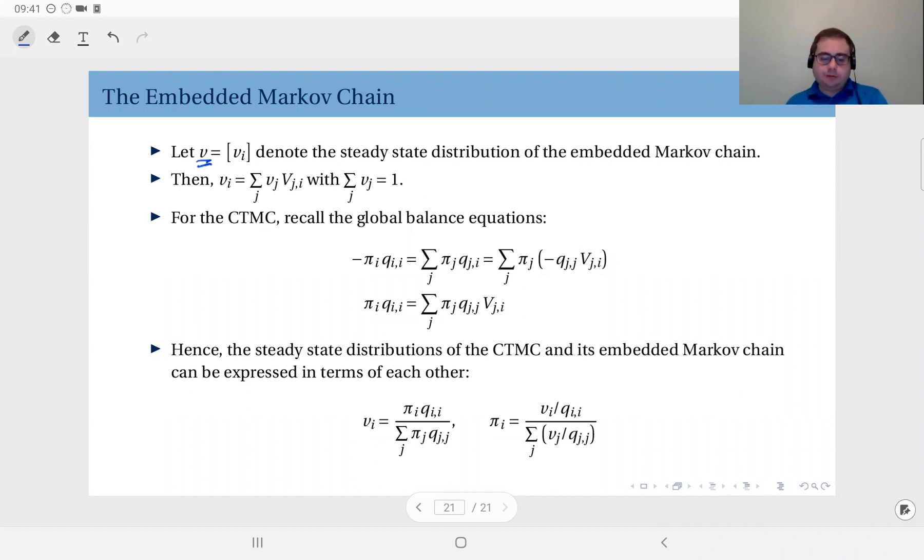global balance equations. It satisfies v equals v times V, which is its state transition probability matrix for one step transition. Of course, the components of v should add up to one. For the continuous time Markov chain, we can write the